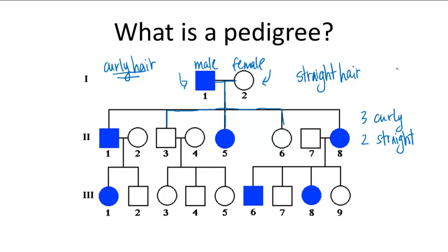And then these offspring grow up to have children of their own and we see again three grandchildren that have curly hair and six grandchildren that have straight hair. So this is all represented by the colored in individuals versus the not colored in individuals.